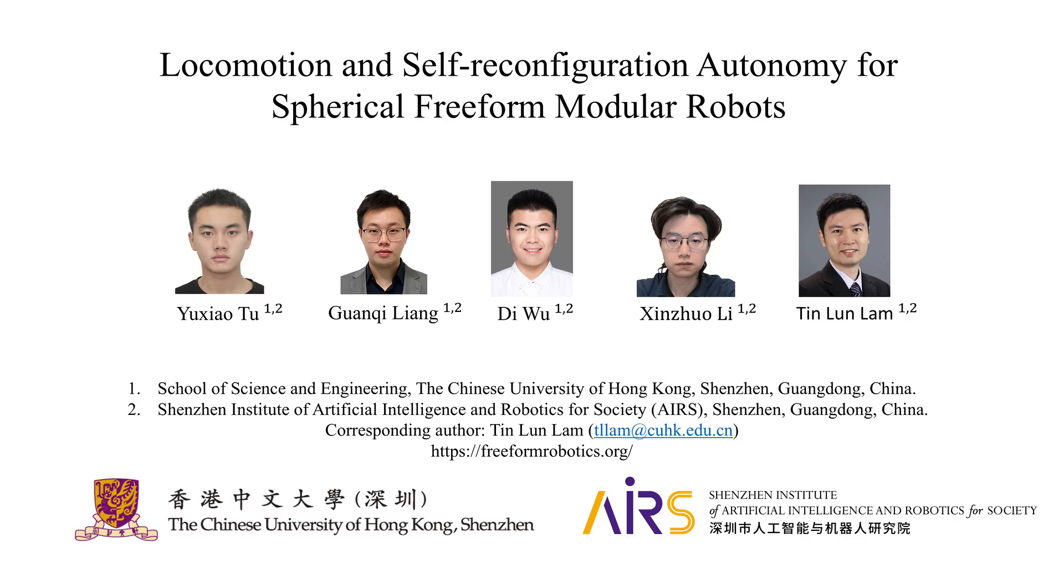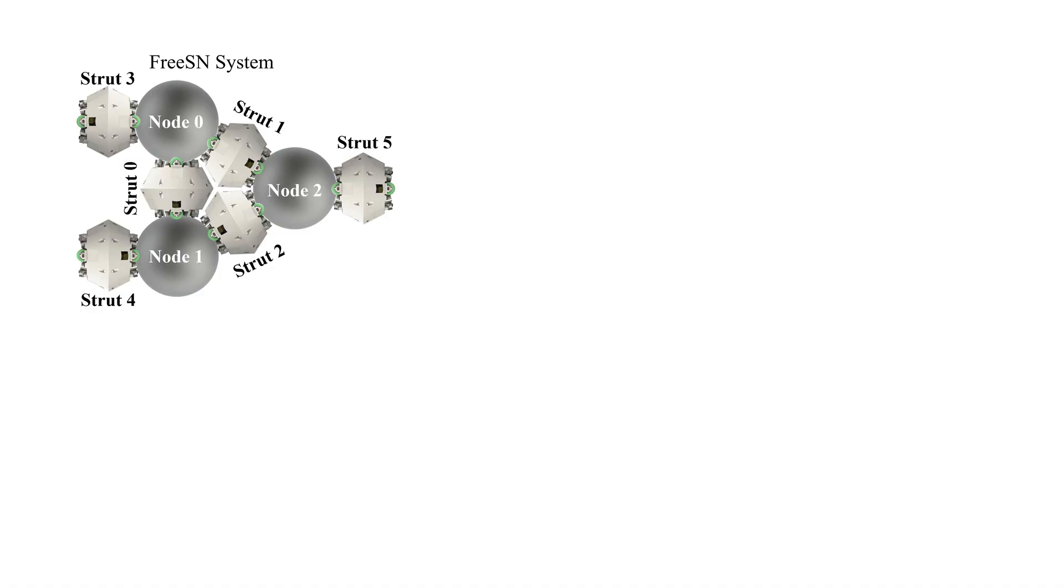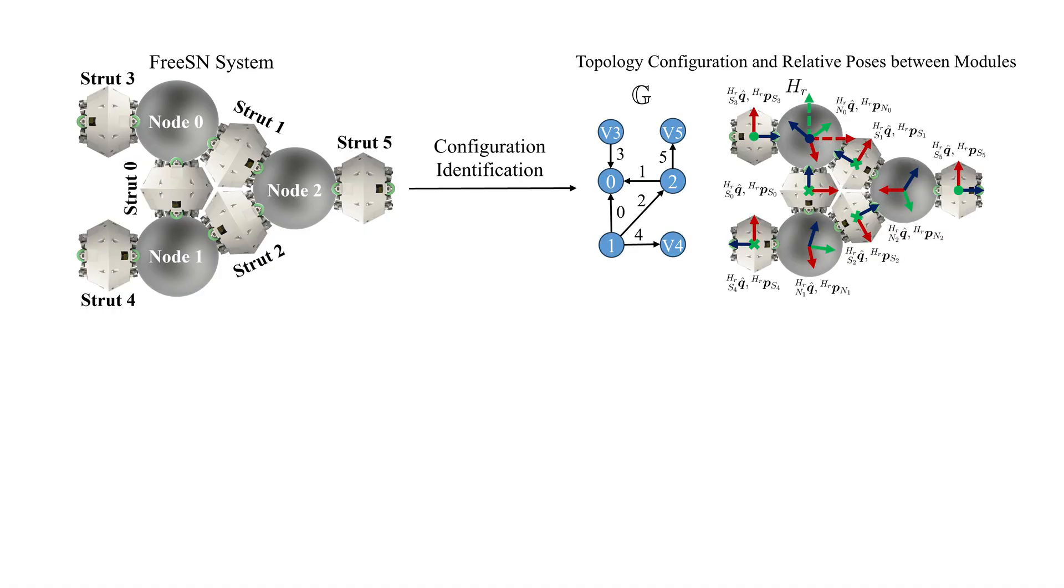Freeform modular robots are a type of modular robot with no fixed-point connectors and continuous connections between modules. However, existing autonomy approaches are inapplicable to them due to their redundant degrees of freedom and incompatible self-reconfiguration approaches.